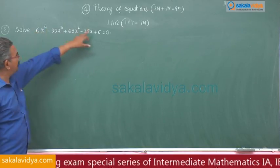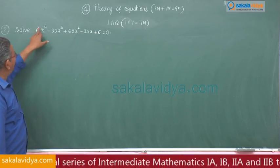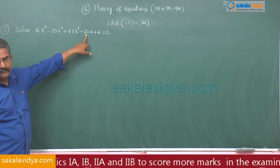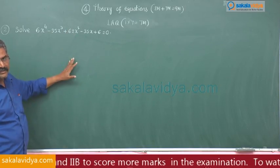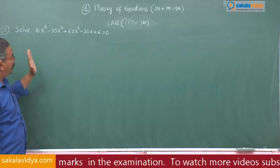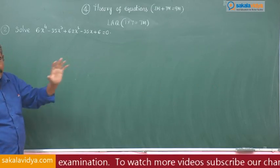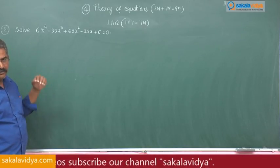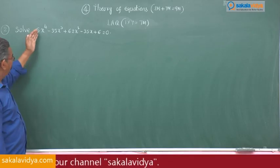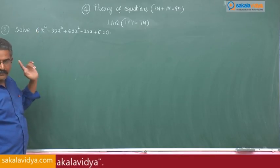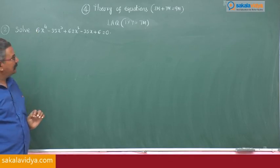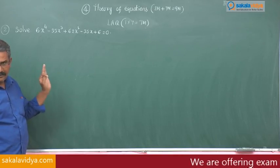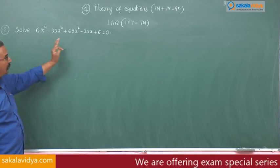Observe: a₀ equals a₄, and a₁ equals a₃. That means aₖ is equal to aₙ₋ₖ for every k equal to 0, 1, 2, 3. So this is a reciprocal equation of even degree of first class, or we can say a standard reciprocal equation of even degree.